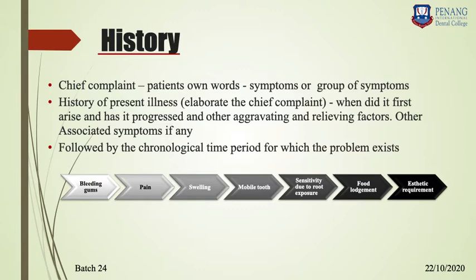Elaboration starts from when it first appeared, how it progressed, what aggravates it, what relieves it, and any associated symptoms. For example, if there is bleeding gum, ask the patient when they first noticed it, how frequently it happens, whether it is induced by anything or happens spontaneously, how long the bleeding lasts when it occurs, and how frequently it happens.